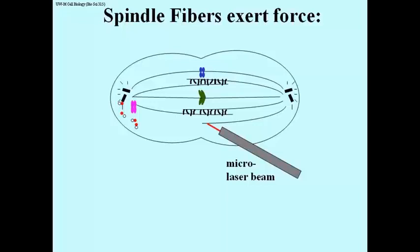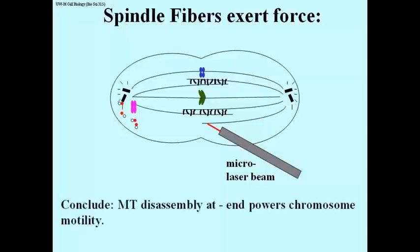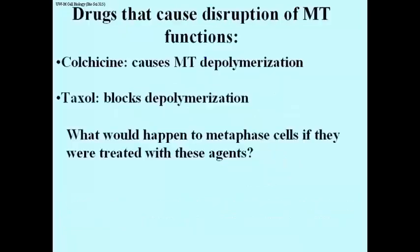The take-home message is that microtubule disassembly at the minus end is what powers the movement of chromosomes from the metaphase plate during anaphase and eventually telophase to opposite poles of the cell. Dynein motors separate the polar microtubules at the same time as microtubule disassembly occurs at the minus end.